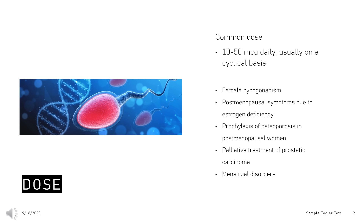Prophylaxis of osteoporosis in postmenopausal women, Adult: in women at high risk of future fractures who are intolerant of, or contraindicated for, other osteoporosis-preventing therapies, 10–50 mcg daily for 21 days, repeated after a 7-day tablet-free period, to be given with a progestogen for 12–14 days per cycle, in women with an intact uterus or endometriosis when endometrial foci may be present despite hysterectomy. Not recommended to add a progestogen in women without a uterus who did not have endometriosis diagnosed.